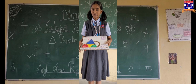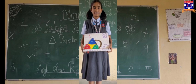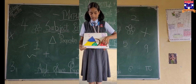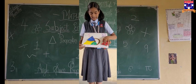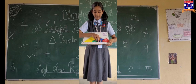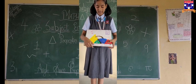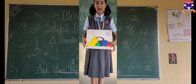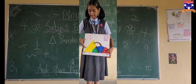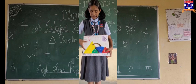Now I will show you the angle sum property. We know that all angles together make 180 degrees. The first angle is 60 degrees, the second angle is 55 degrees, and the third angle is 65 degrees. The formula of the angle sum property is angle A plus angle B plus angle C, which is equal to 180 degrees.